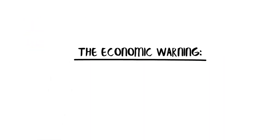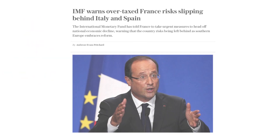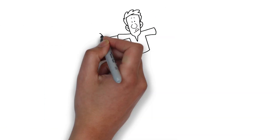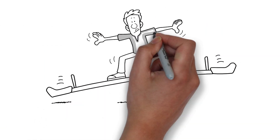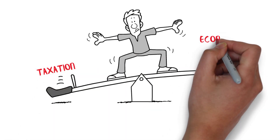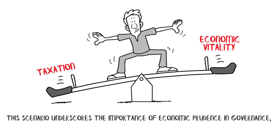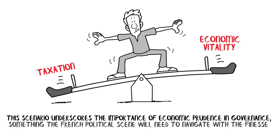The economic warning — a cautionary tale: a recent article titled 'IMF warns overtaxed France risks slipping behind Italy and Spain' adds another layer to our understanding of French politics. The IMF's warning highlights a critical challenge: the balancing act between taxation and economic vitality. It's like a tightrope walker trying to maintain balance — one wrong move could lead to a significant fall. This underscores the importance of economic prudence in governance, something the French political scene must navigate with the finesse of a seasoned diplomat.